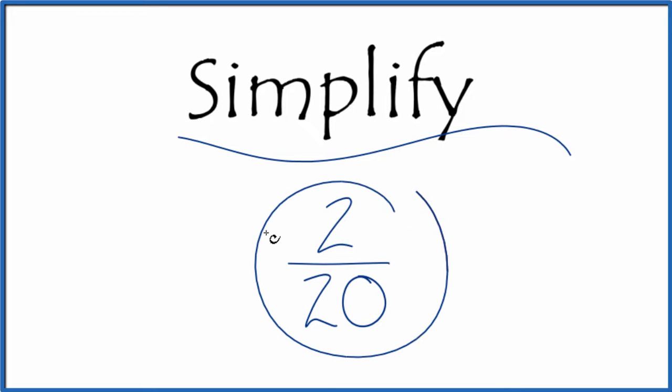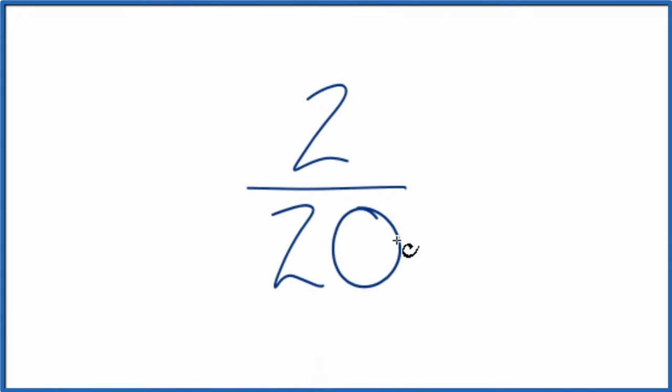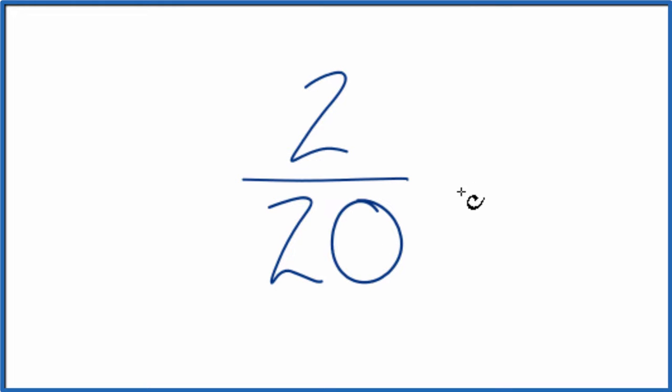Let's simplify the fraction 2/20. Here's how we do it. What we're trying to do is find another fraction that's equivalent. It has the same value as 2 over 20. It's just that we've simplified it to lowest terms.